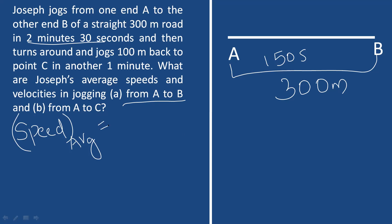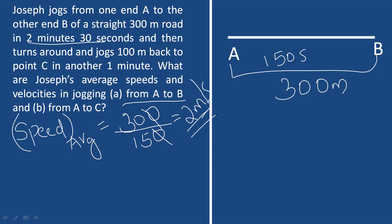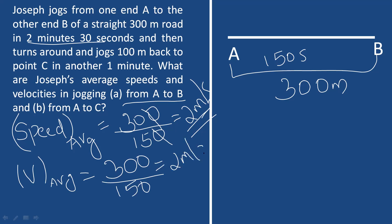Average speed equals total distance divided by total time taken. For A to B: distance is 300 meters and time is 150 seconds. Average speed equals 300 divided by 150, which equals 2 meters per second. For average velocity, we use net displacement divided by total time taken. Since Joseph moves in a straight line from A to B, the displacement equals the distance, so average velocity is also 2 meters per second.